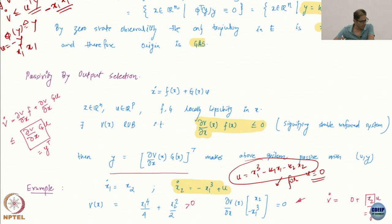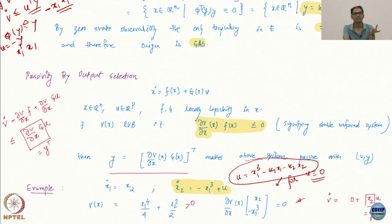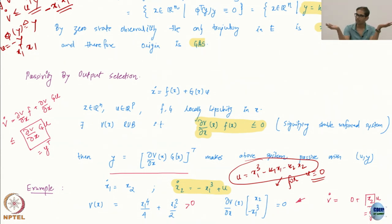It may look like we made up these assumptions just to make the theory work, but these assumptions do get satisfied a lot of times. One method is passivity by output selection. In many systems we are designing controllers for, there may not be real outputs — we might have the flexibility to choose outputs so that the system has the passivity property with respect to that output. Passivity is a property related to input and output, so if you have the choice of output, you might be in good shape.